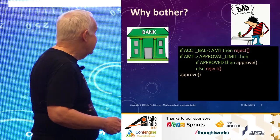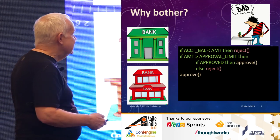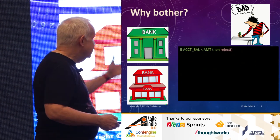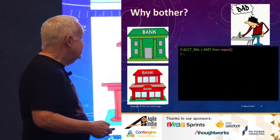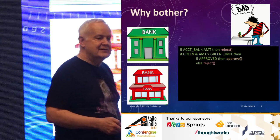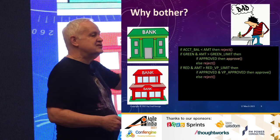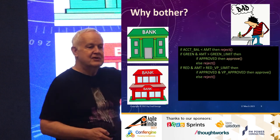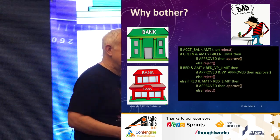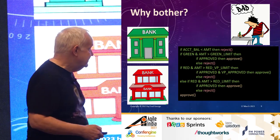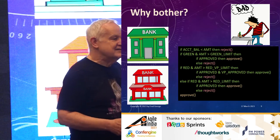Along comes another bank — the red bank — we want their business too. So what do we do to our code? Most people care about bank balances. But if you're the green bank, you care about this green limit. If you're the red bank, we have a super limit — if it's really high, we want the VP to sign off. One tier lower, just pay that. Otherwise, approve it. The essence of the problem is gone. We now get the fruit salad.